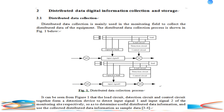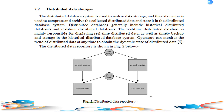It can be seen from Figure 1 that the row circle, detection circle, and control circle together form a detection device to detect input signal 1 and input signal 2 of the monitoring site respectively, so as to determine useful distributed data information and use the collected distributed data information as sample data. The distributed database system is used to realize data storage. The data center is used to compress and archive the collected distributed data and store it in the distributed database system.